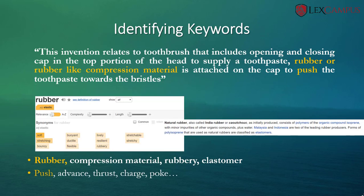The only keywords we are still missing are rubber or rubber-like compression material, and also push. A quick thesaurus search on rubber would yield soft, stretching, or other properties of rubber, but we would be fine selecting rubber compression material. A quick Wikipedia search also yielded elastomer as another relevant keyword for this disclosure. For push, we can use advanced, thrust, charge, or poke, but push is the closest word relevant in this case.